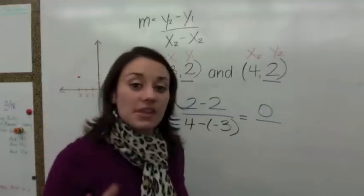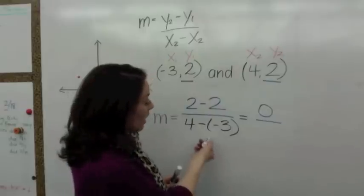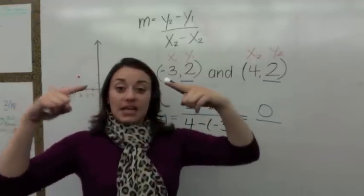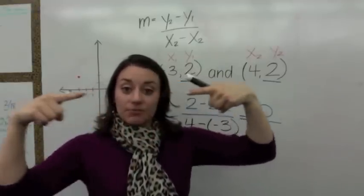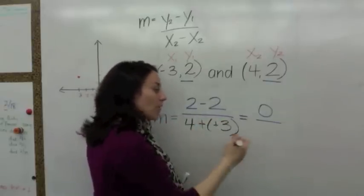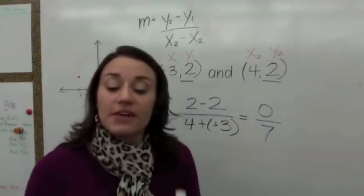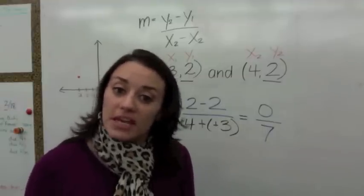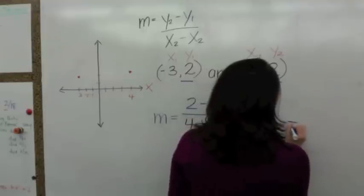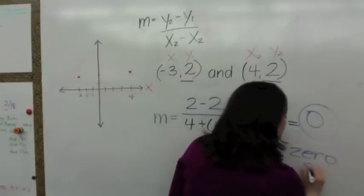If I have nothing and I try to give it to — let's take a look. You have 4 minus a negative 3. Negative times negative makes positive, so if you change this to positive it's 4 plus 3, which would be 7. If I have nothing and I try to give it to 7 people, what are they going to get? They're going to get nothing. So here, you have a 0 slope.